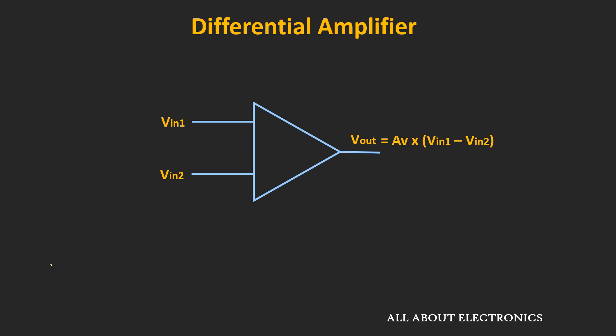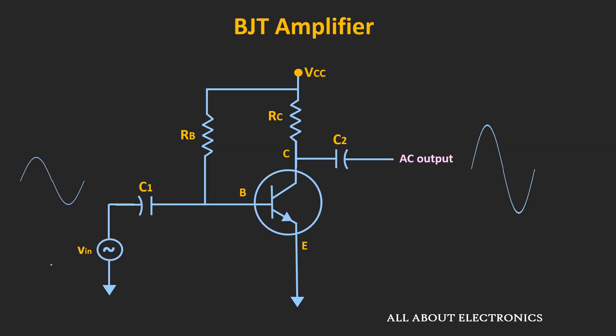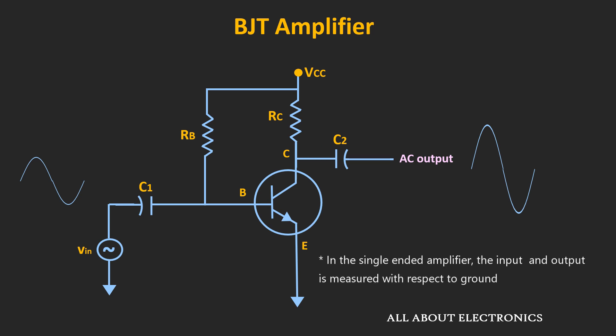First, let's understand what is differential input and what is the difference between single-ended and differential input. All the BJT amplifiers we have discussed so far are single-ended, where the input is applied between the input and the ground terminal, while the output is measured between the output and the ground terminal.